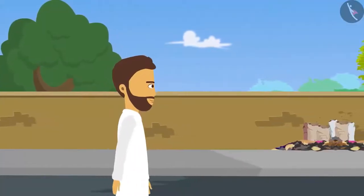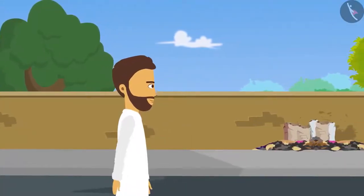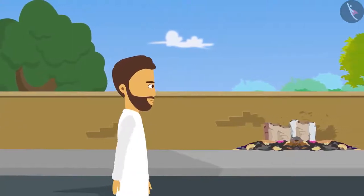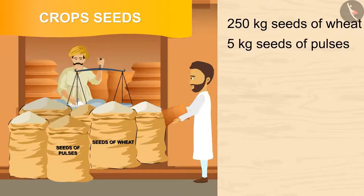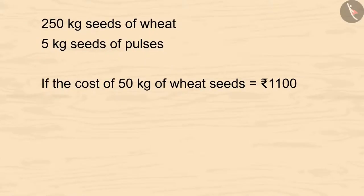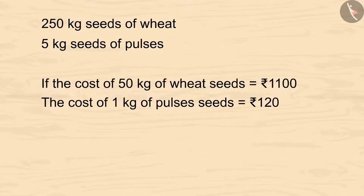Today Garim Bhai is very happy and is going to buy some seeds of wheat and pulses. He bought 250 kgs of seeds of wheat and 5 kg seeds of pulses. If the cost of 50 kg of wheat seeds is 1100 rupees and the cost of 1 kg of pulses seeds is 120 rupees, so how much money did Garim Bhai spend on pulses seeds?